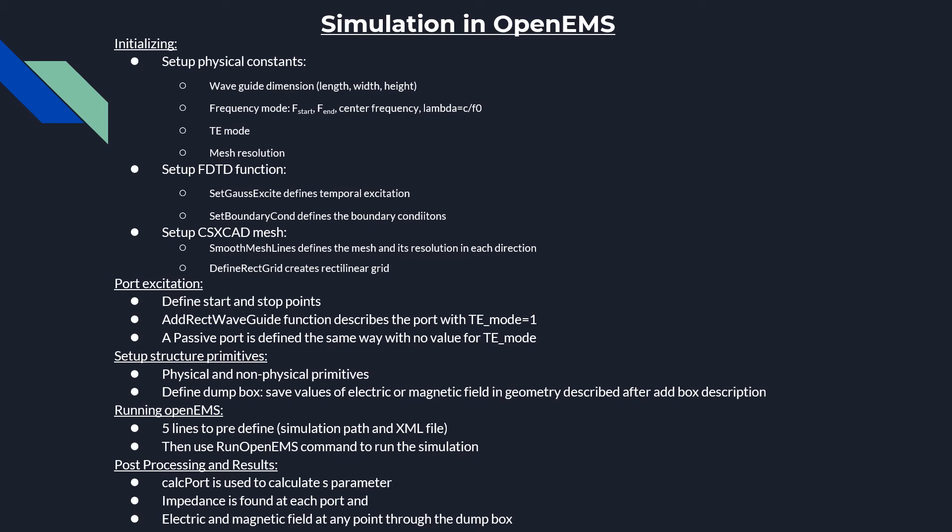Post-processing involves finding the S-parameter using the CALC port function, the impedance at each port, and the magnetic and electric field values at any point through the dump box created earlier. Finally, the results portray the S-parameter values, the impedance values, and the electric field through the waveguide.